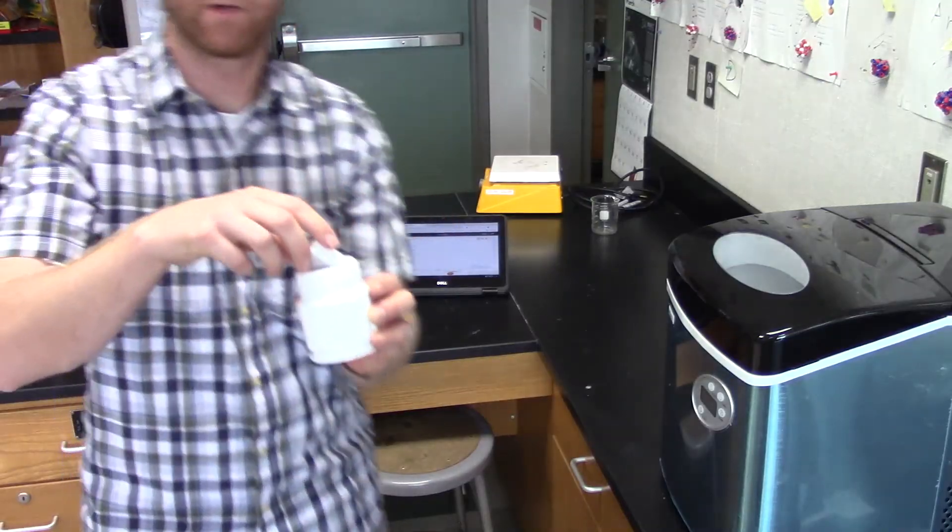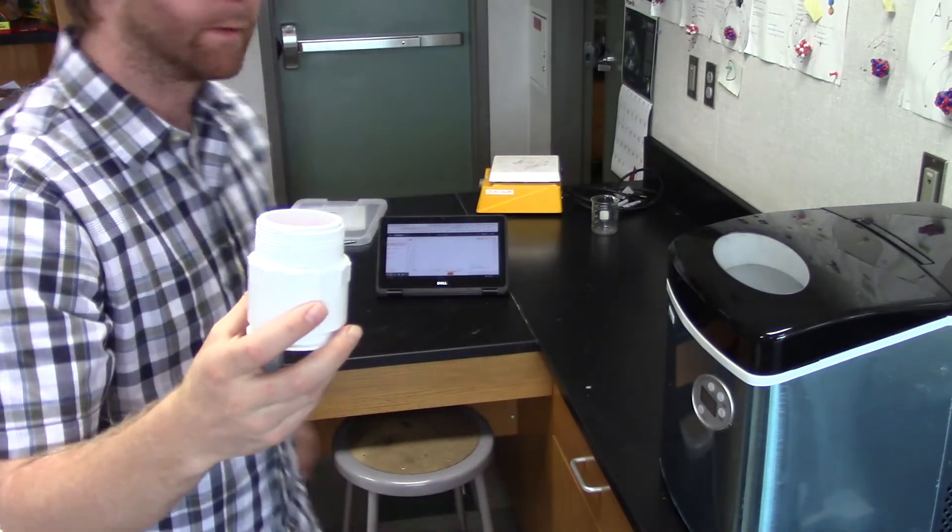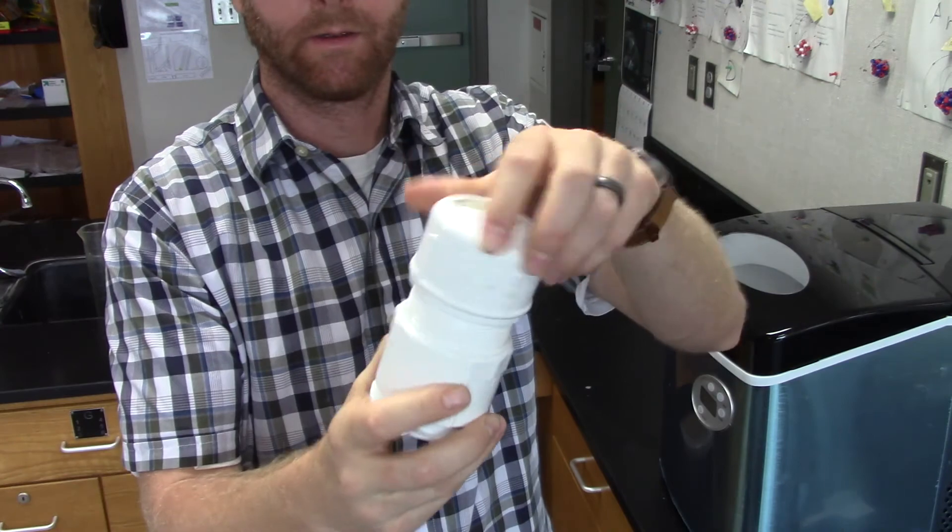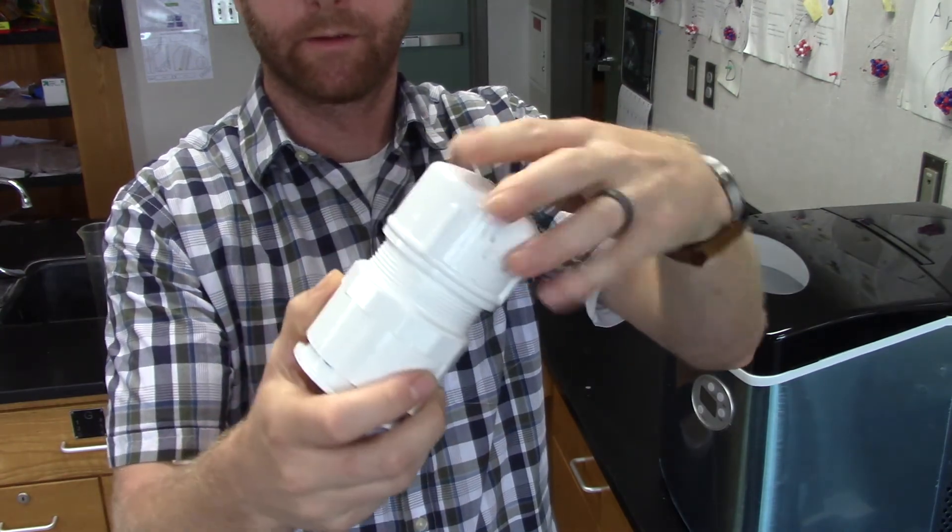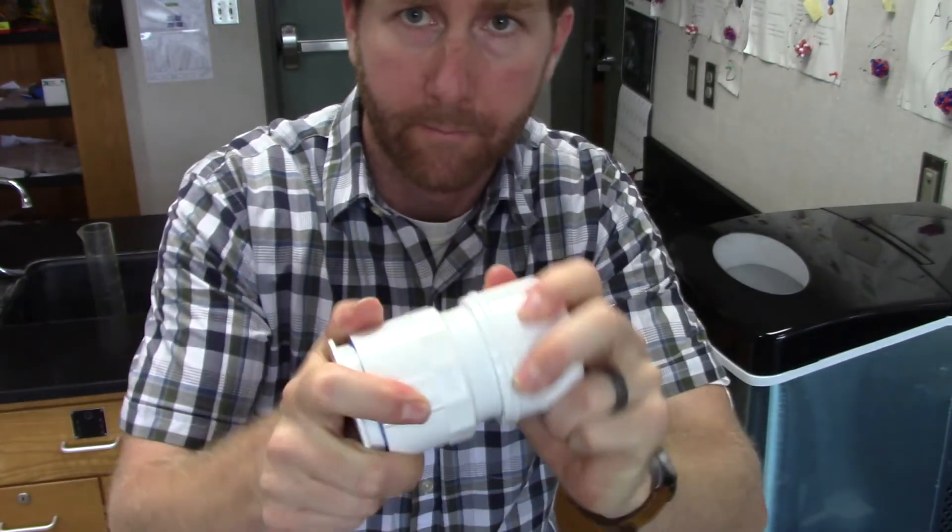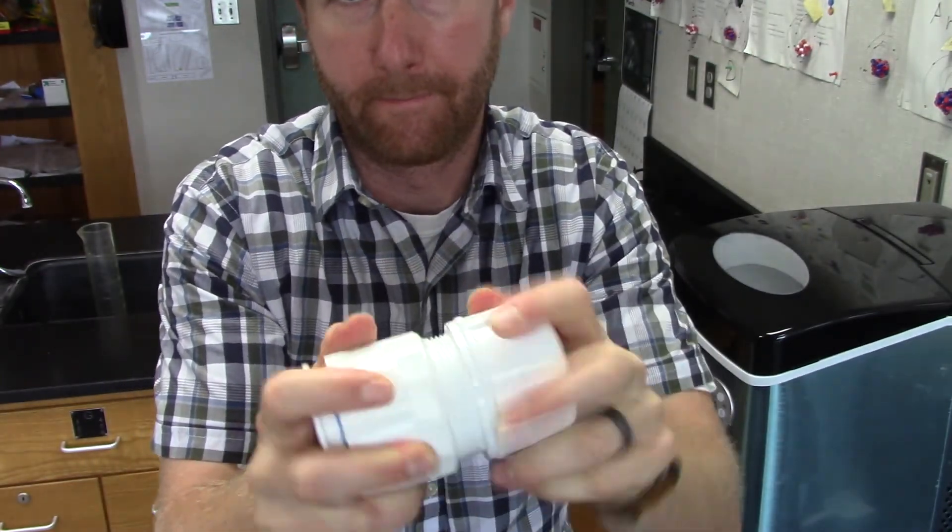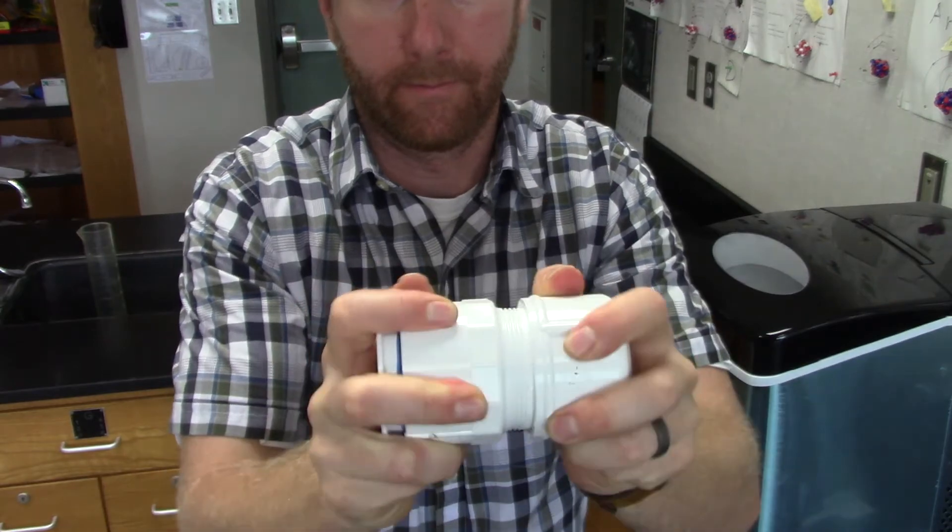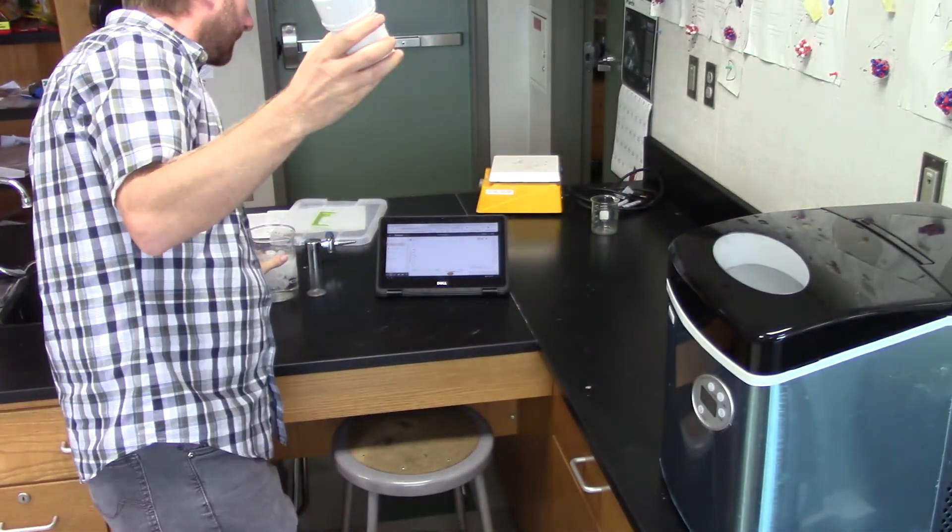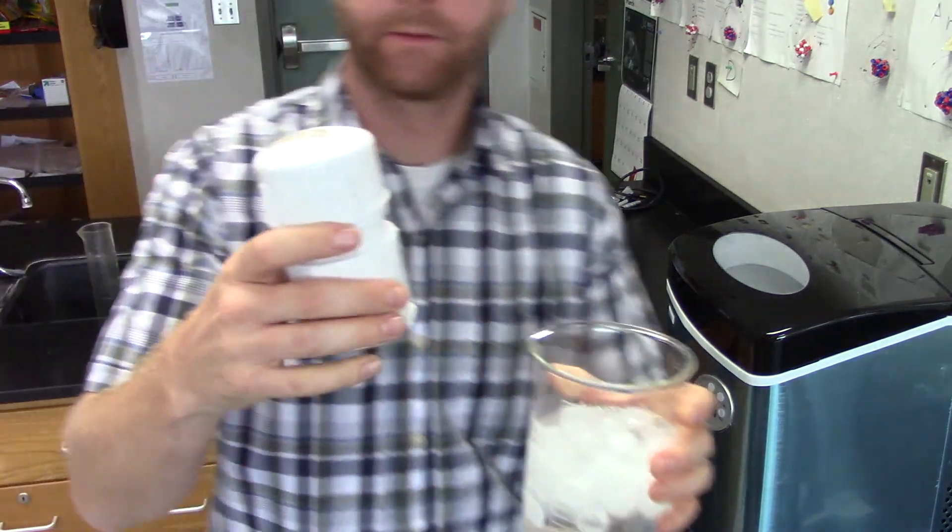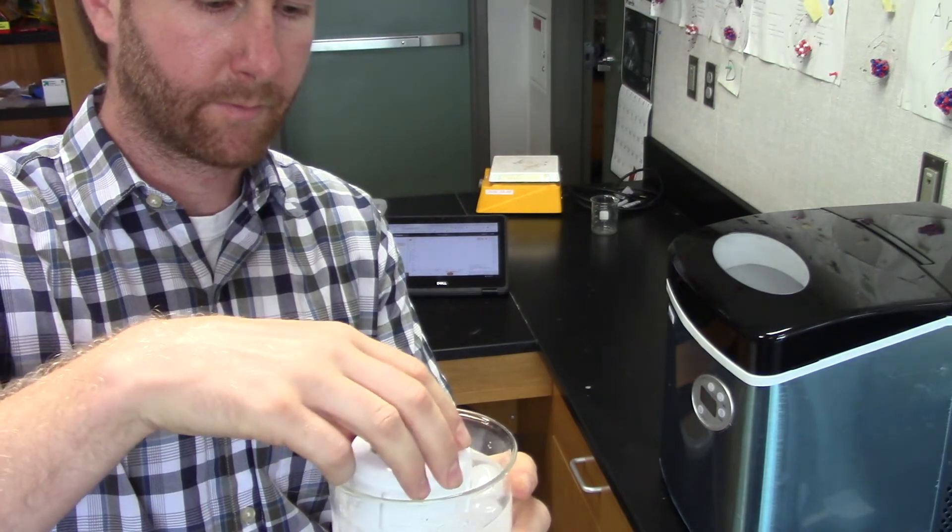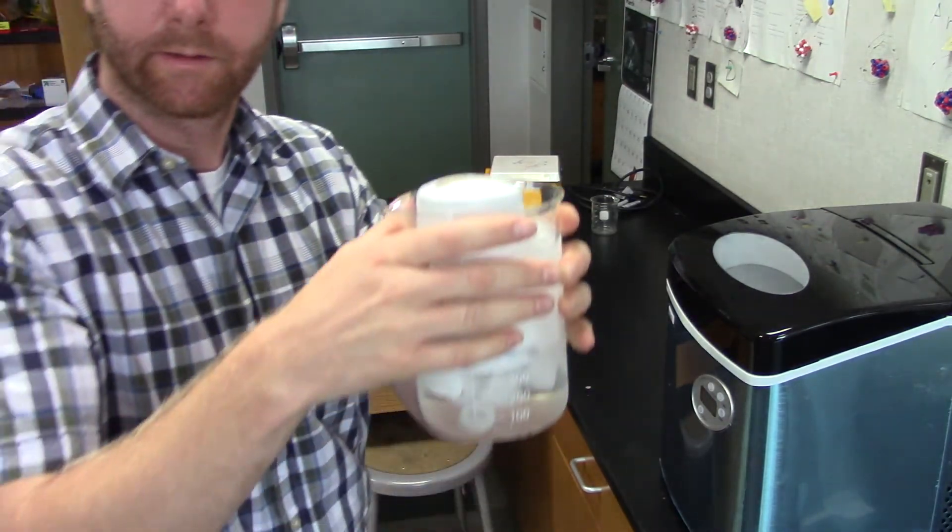We're putting the Pocket Lab here into the canister, seal this with some Teflon tape. Going to tighten this down nice and tight. And we'll set this here into the ice water bath, and we'll let it sit.